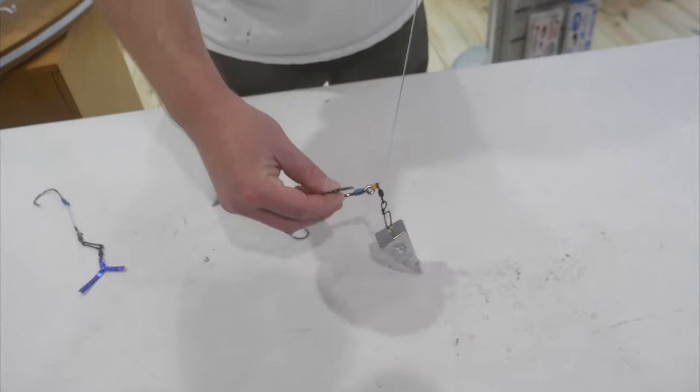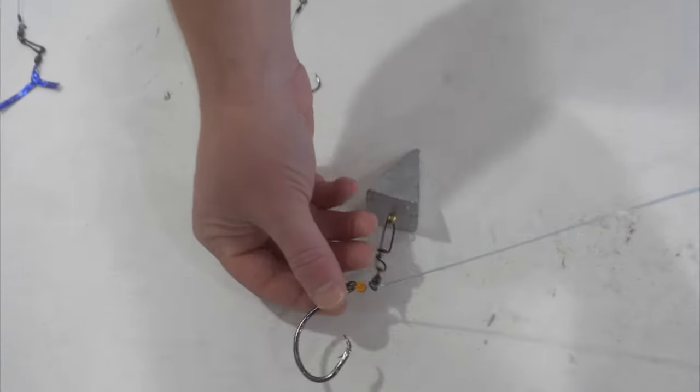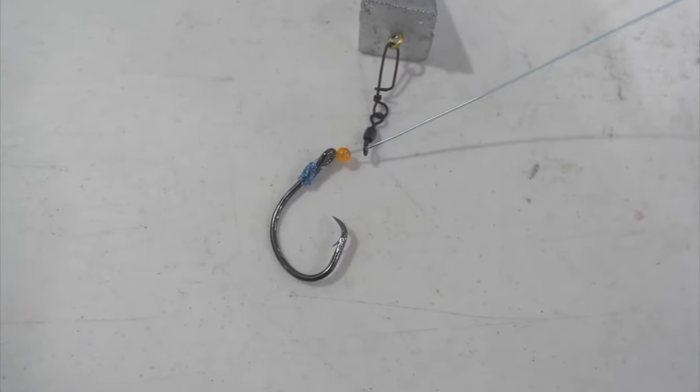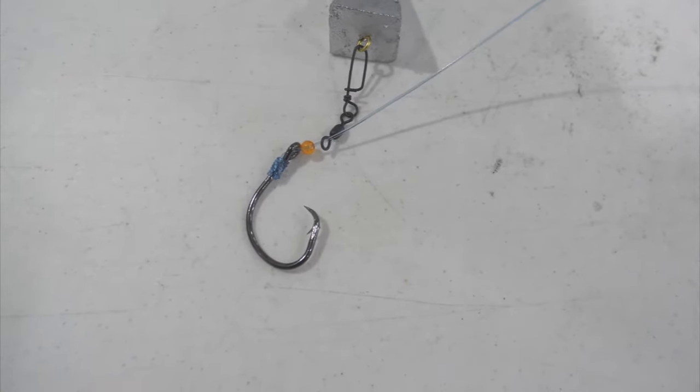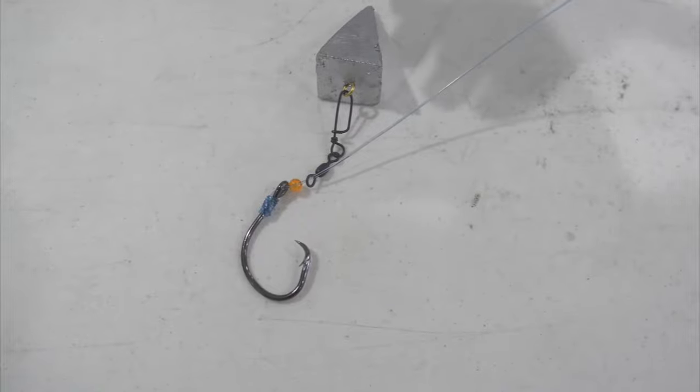I like this one because it's an inverted circle hook that sits on the bottom of the ocean floor, and that's great for drum, sharks even, cobia, and catfish. So there's a lot of versatility in this one particular rig.